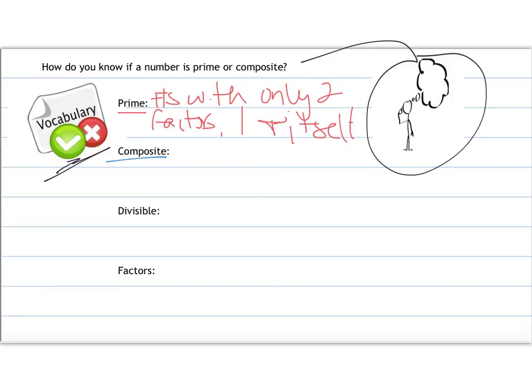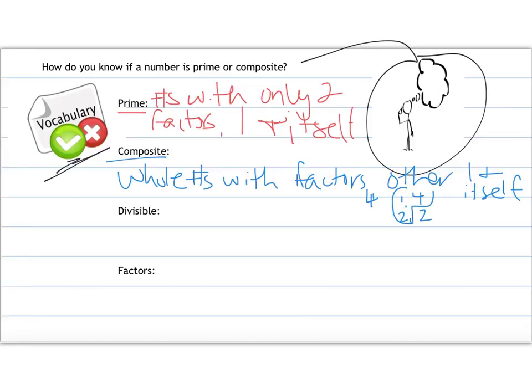Composite numbers are whole numbers with factors other than one and itself. So for example, a composite number would be a number like four. Four has factors of one and four or two times two, so it really only has three number factors. That's more than just the two, one and four. Whereas a prime number example would be three because its only factors are one and three, so just the two factors.